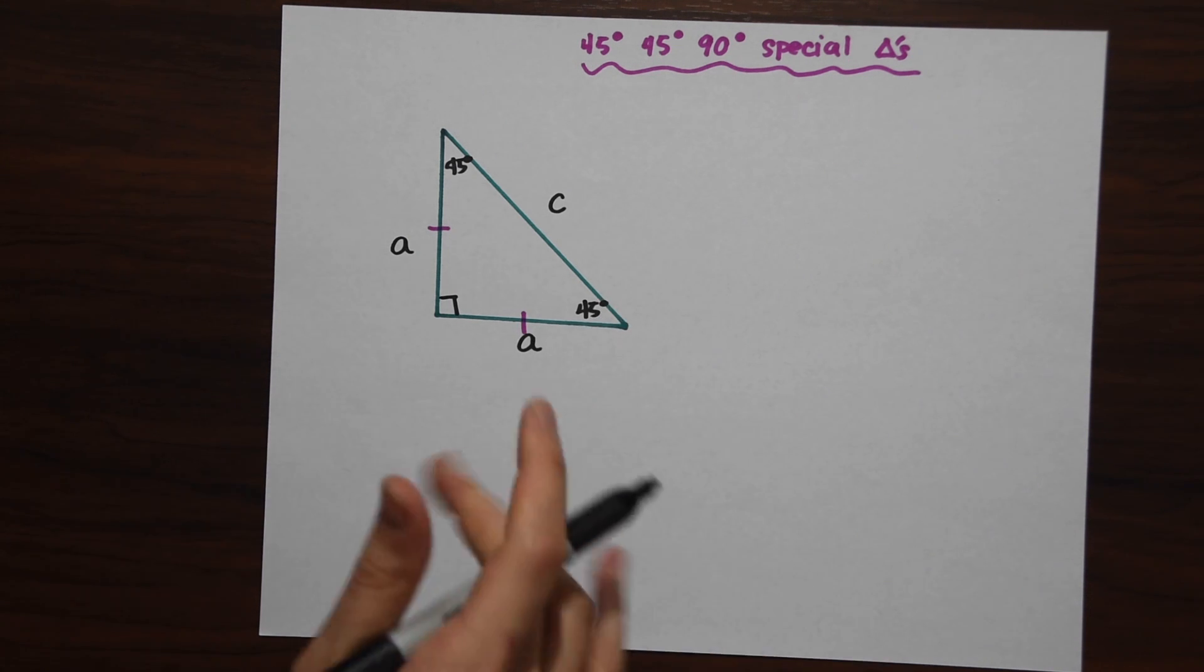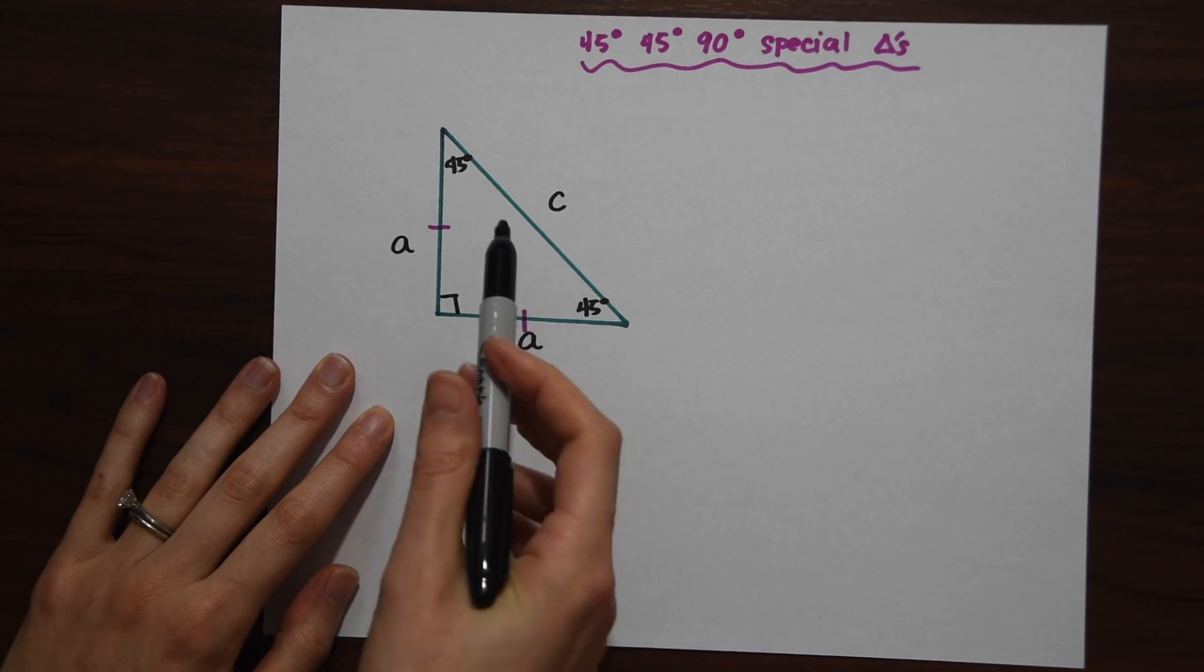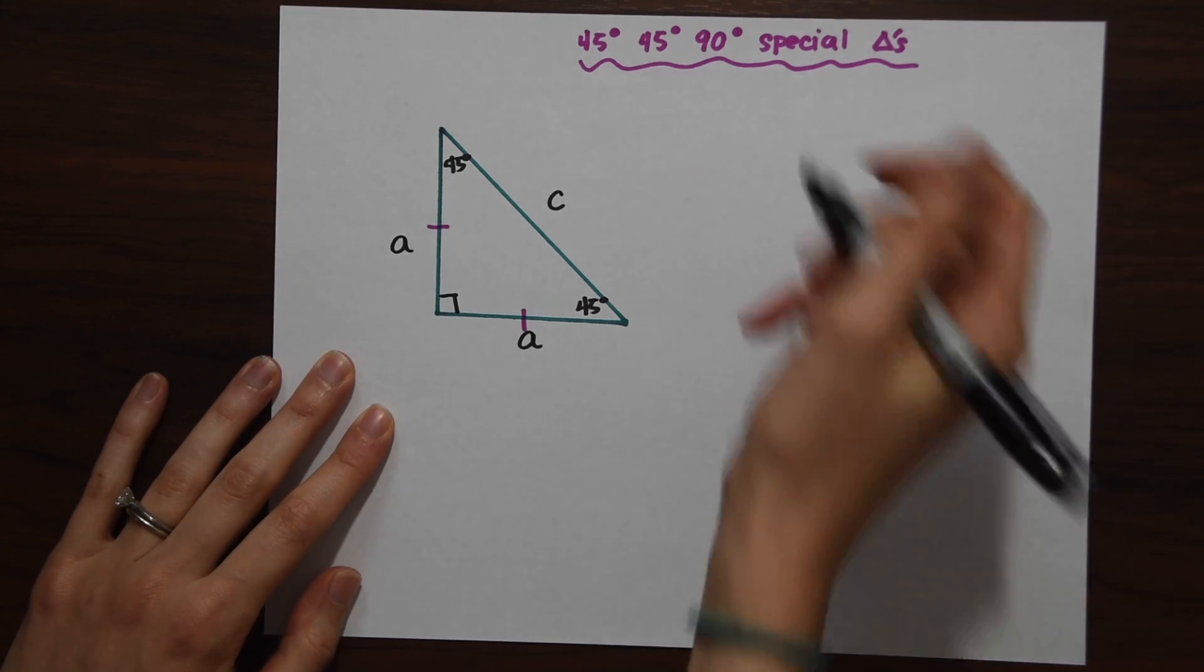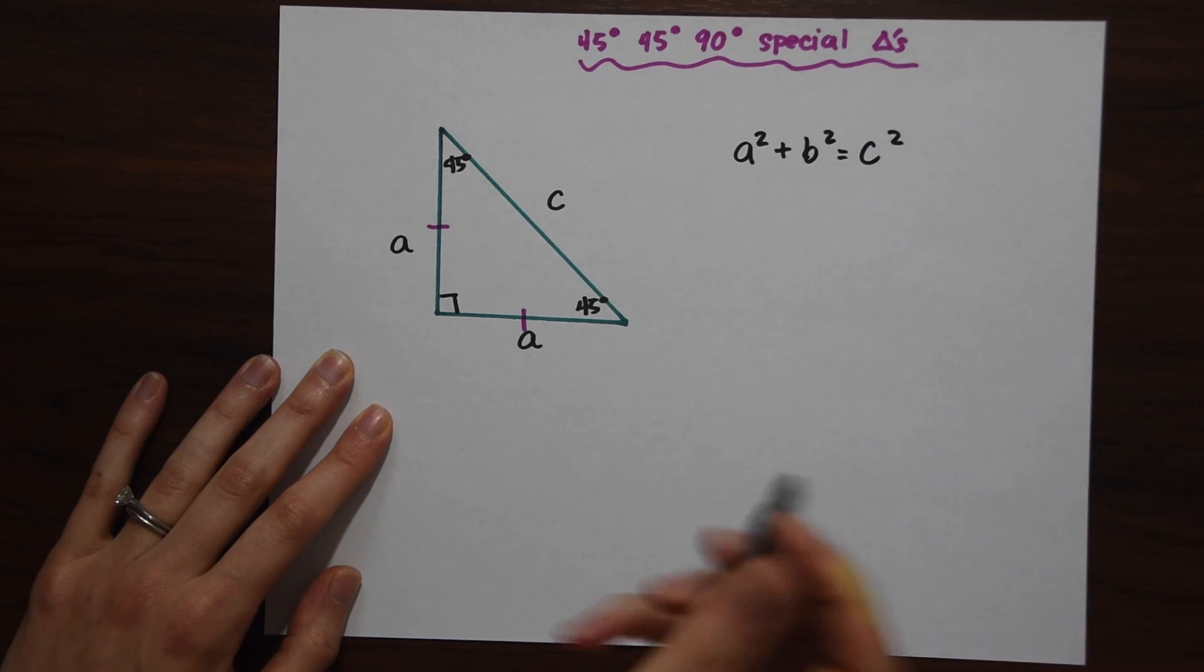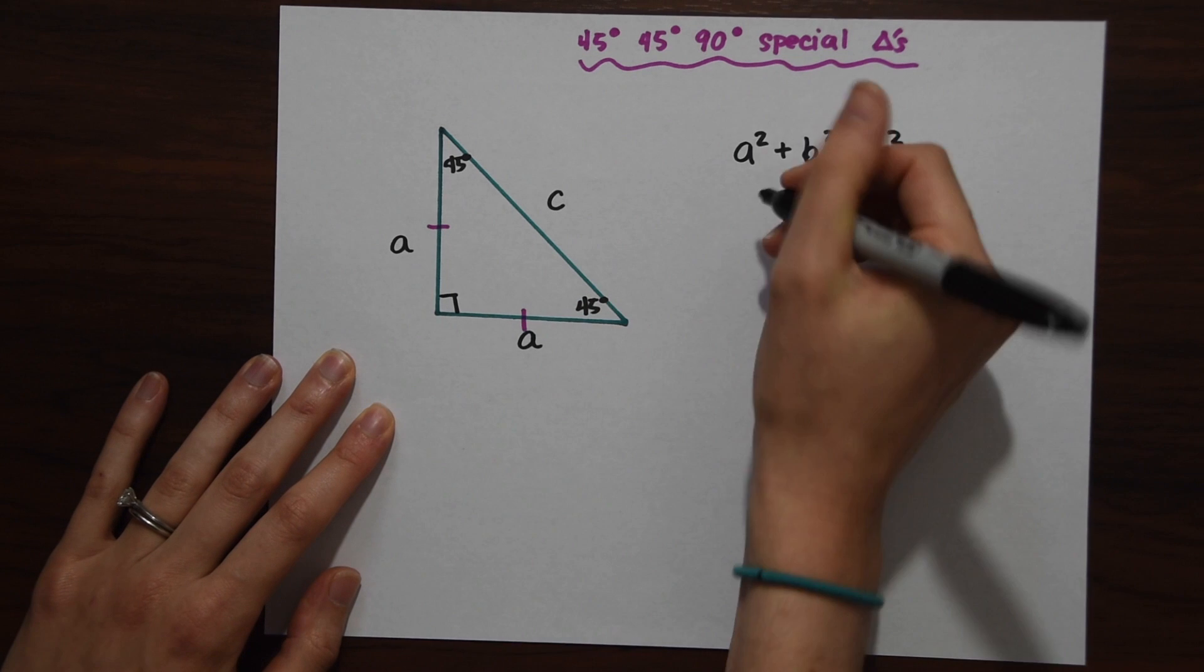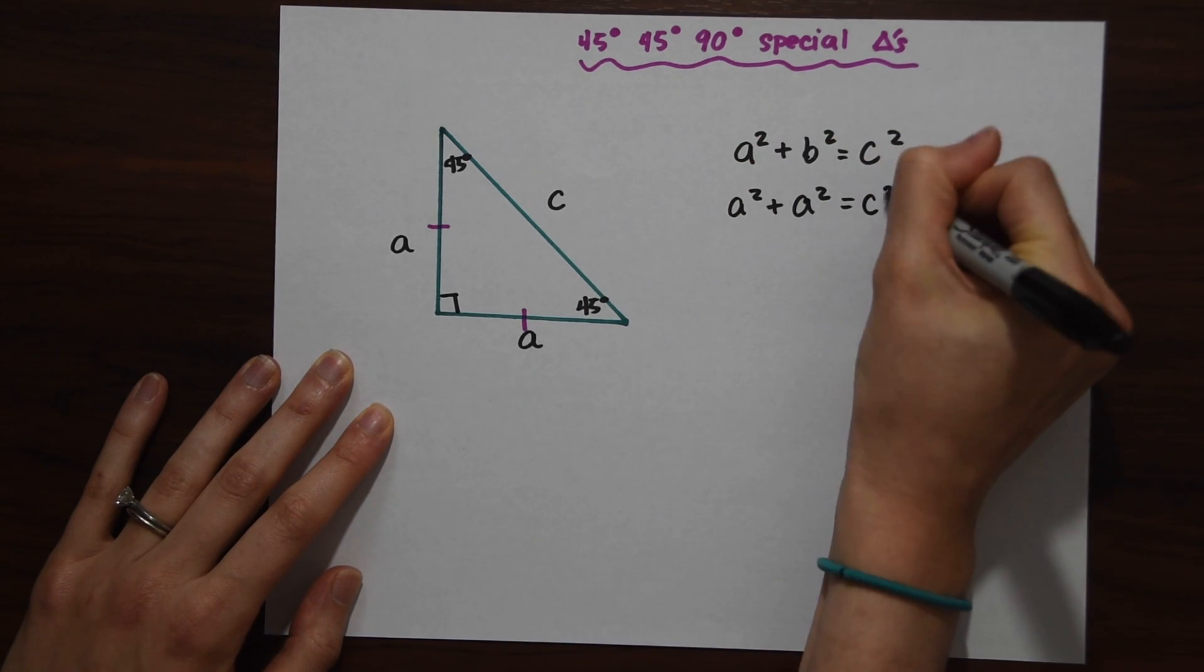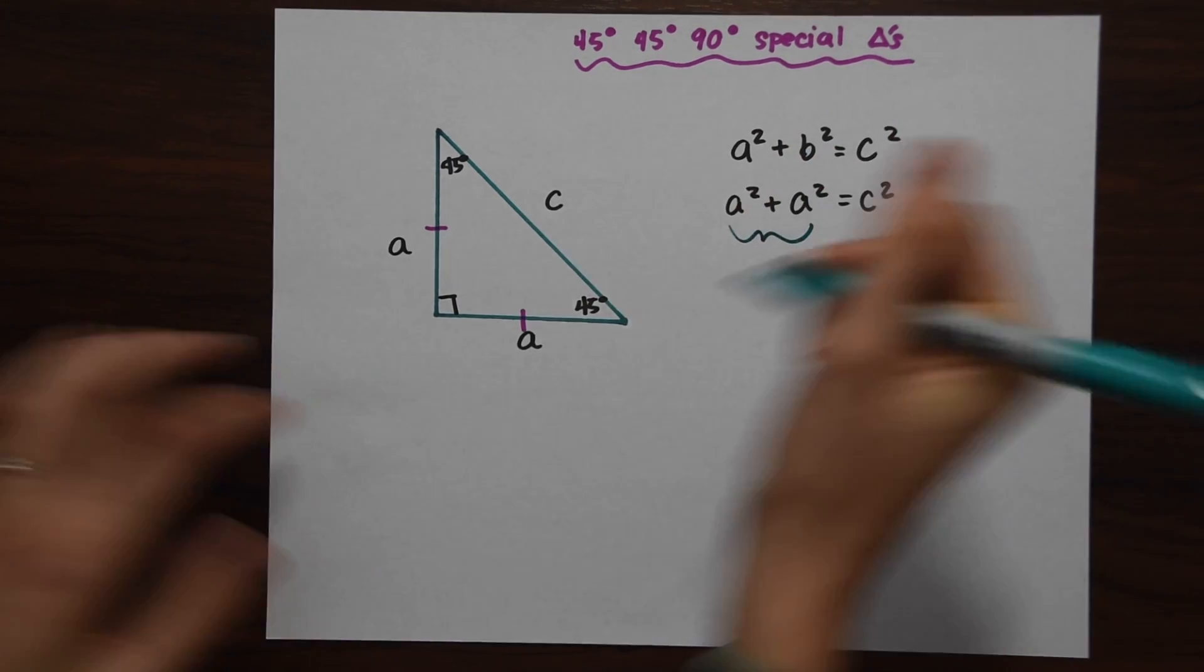So we have our triangle labeled here, a and a, because these are two equal sides, and then we want to find c in terms of a using the Pythagorean theorem. Let's write out the Pythagorean theorem: a squared plus b squared equals c squared. Now let's plug in the values we have here. We have a squared plus a squared equals c squared. Notice we can combine like terms here.